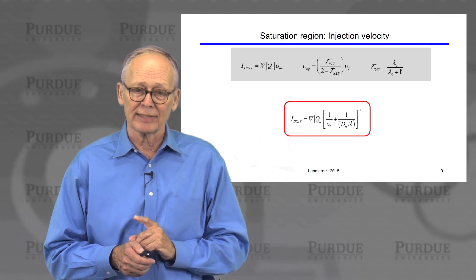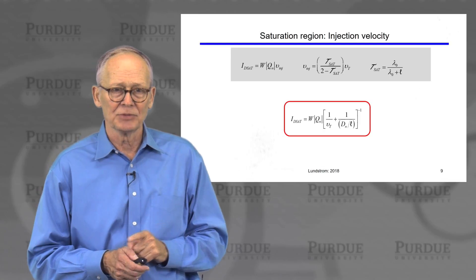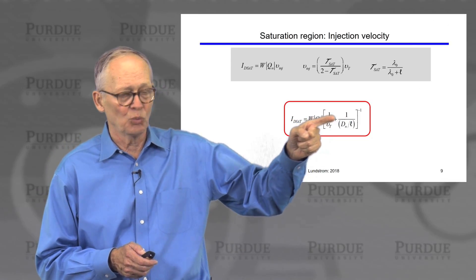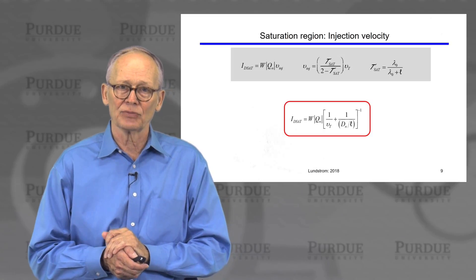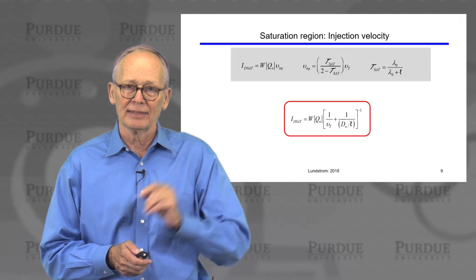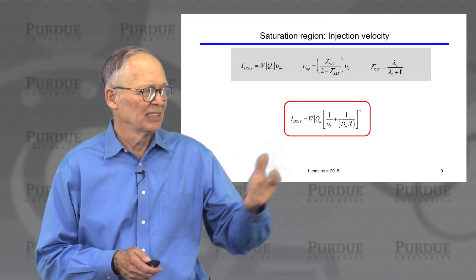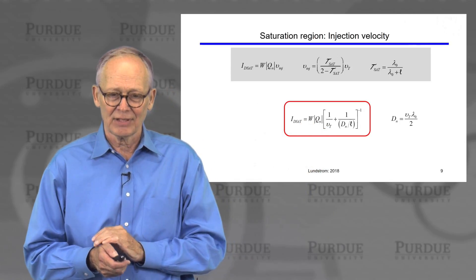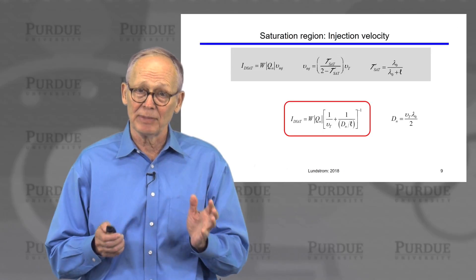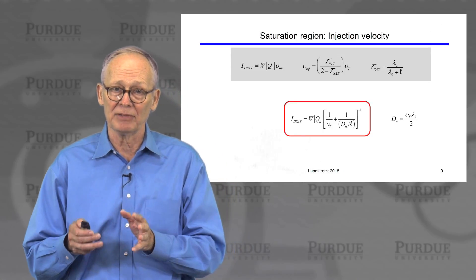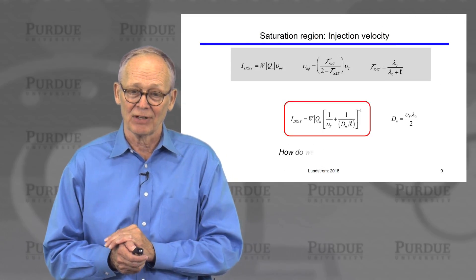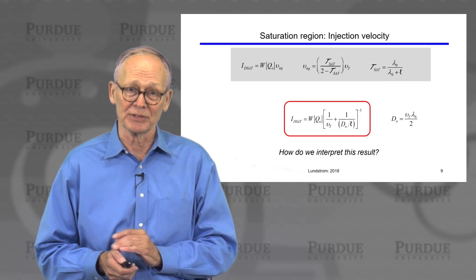Saturated current is width times charge times one over the unidirectional thermal velocity plus one over diffusion coefficient divided by length to the minus one power. So this quantity has the units of velocity. D is just the diffusion coefficient, thermal velocity times mean free path for scattering in the bulk divided by two.